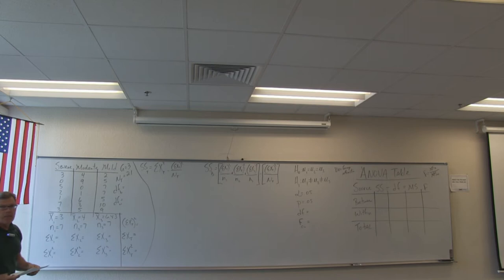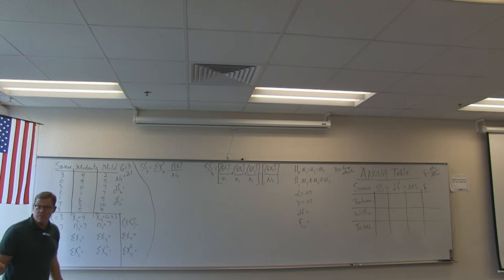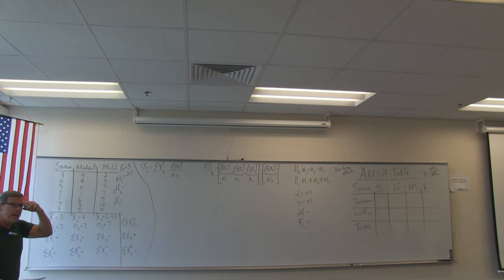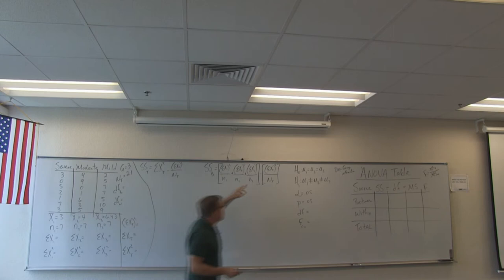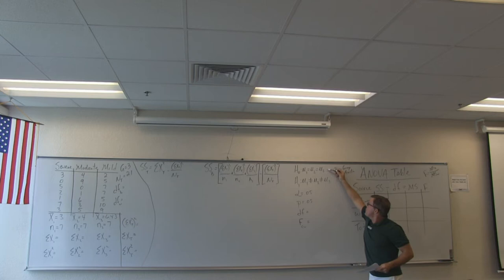If the F statistic falls out in the tail, we can reject the null and say that event is a rare enough event to be deemed significant. If the F falls in the middle somewhere, we accept the null and conclude that event is just common, everyday stuff — nothing extraordinary going on. We have a three-group null and a three-group alternative: no difference versus there is a difference. This problem calls for a 0.05 alpha.